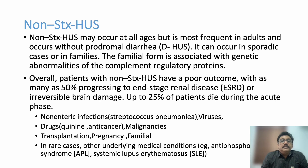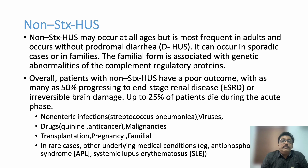Patients with non-Shiga toxin HUS have poor outcomes compared to Shiga toxin HUS. Around 50% may progress to renal failure, and 25% may die during acute attacks. Non-Shiga toxin HUS can result from streptococcal pneumonia, viruses, quinine, anti-cancer drugs, malignancies, post-transplantation, pregnancy, and familial causes including complement regulatory protein deficiency. SLE and APLA syndrome can also produce sporadic non-STX HUS.